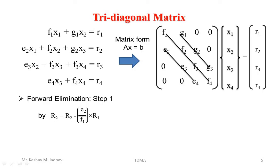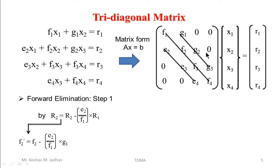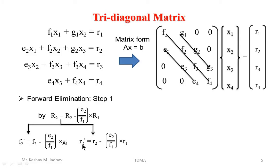For the second element, R2's element is F2 and the corresponding R1 element is G1. So we get F2 − (E2/F1) × G1, giving a new value F2'. The next two elements correspond to zero in R1, so they do not change. For the right-hand side, R2 becomes R2 − (E2/F1) × R1, giving a new value R2'. So in step one we perform only two operations: on F2 and R2.